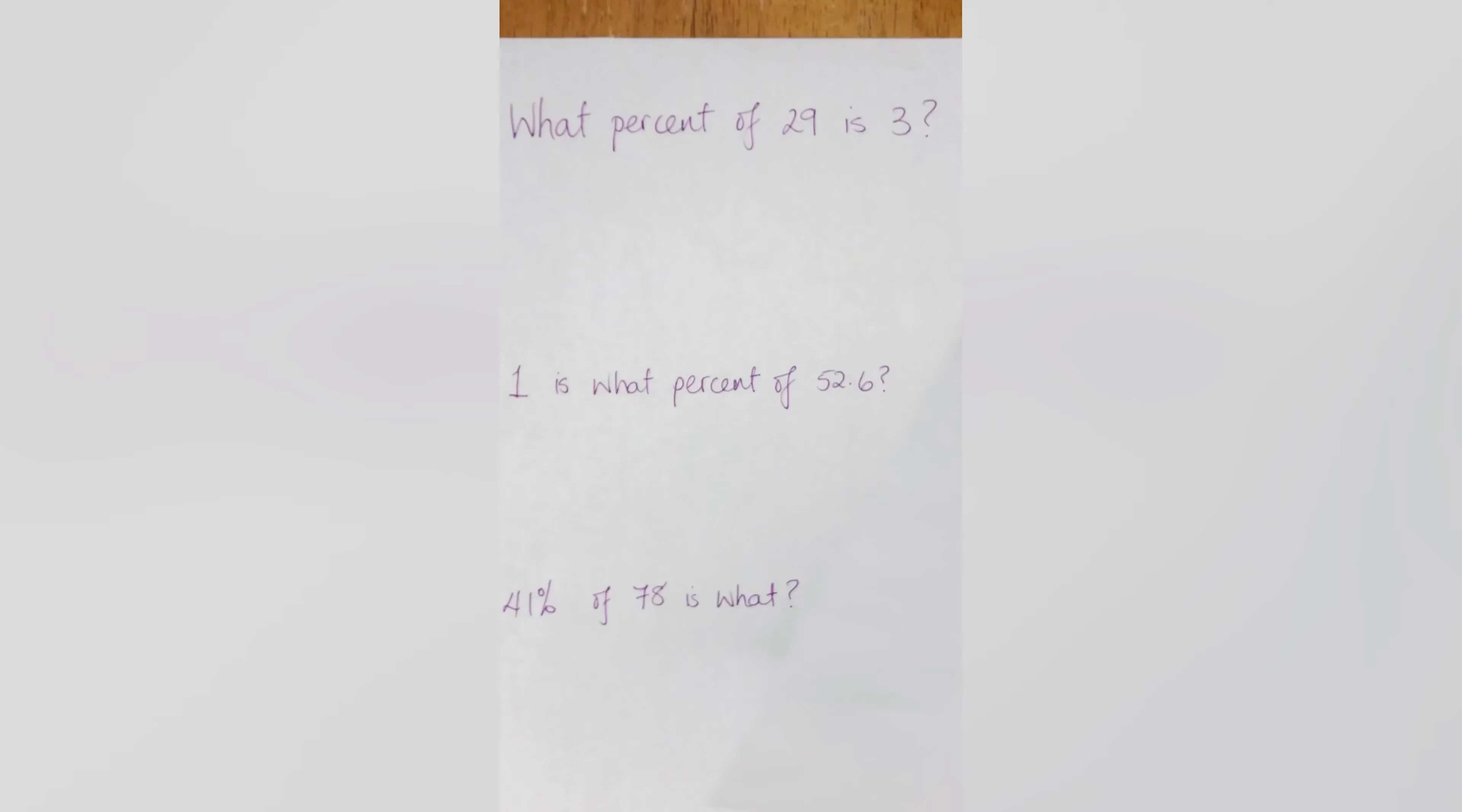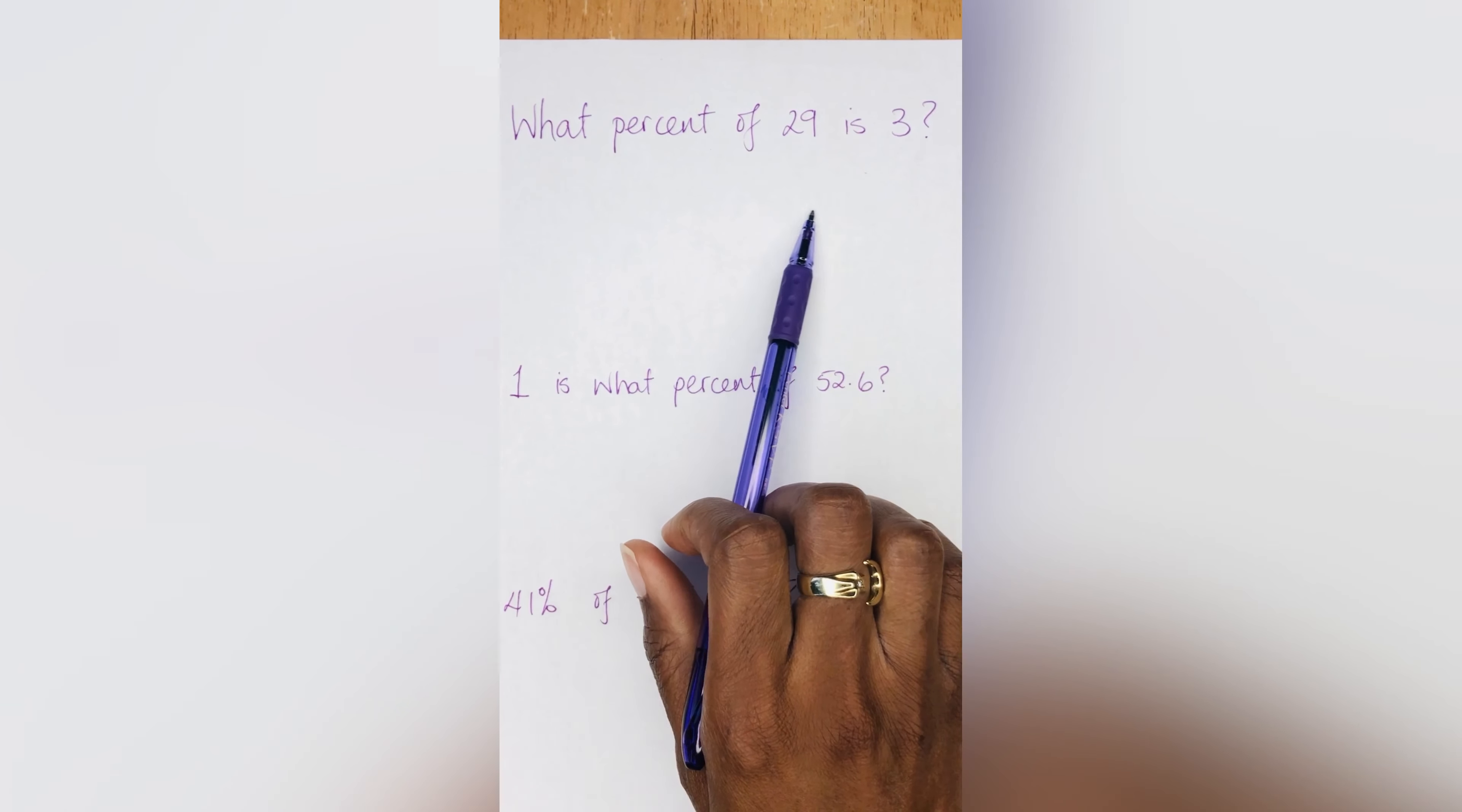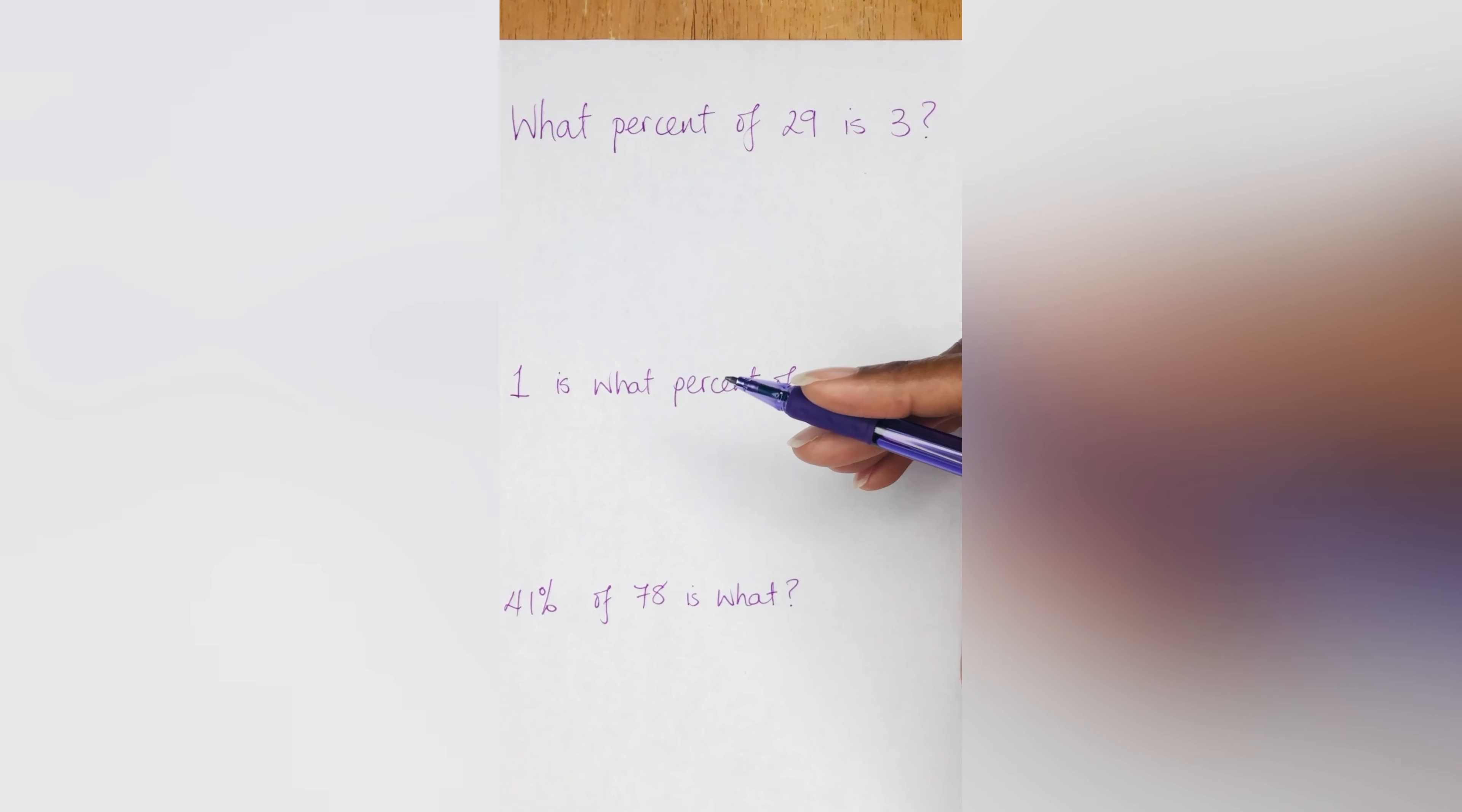Today we are doing percentages and let's get right into it. So I have three separate questions here that I've set up. And I wanted to go through each of them because when you see questions like this, they're worded in a different way. So the first one, what percent of 29 is 3? One is what percent of 52.6 and 41% of 78 is what? Now, because they are three different versions of this, I wanted to show you a formula that you can use depending on what the question says.